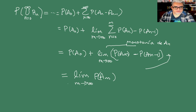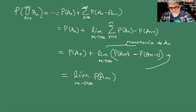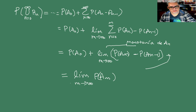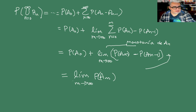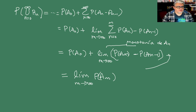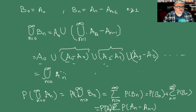Lo que nos demuestra este resultado es que P es continua. Podemos hacer el análogo para una sucesión no creciente. Ya lo hicimos para las no decrecientes, ahora lo podemos hacer para las no crecientes.